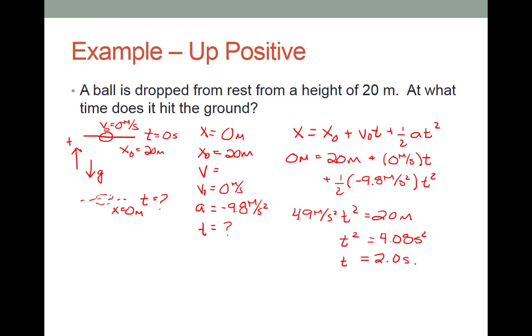Now one thing to remember is technically when you take a square root, you get two possible answers. So the answer could be 2 seconds or the answer could be negative 2 seconds. And you have to choose the correct one. Well, it makes sense here that time is moving forward. So you choose the positive root. Okay. And that's what we did. So t equals 2 seconds.